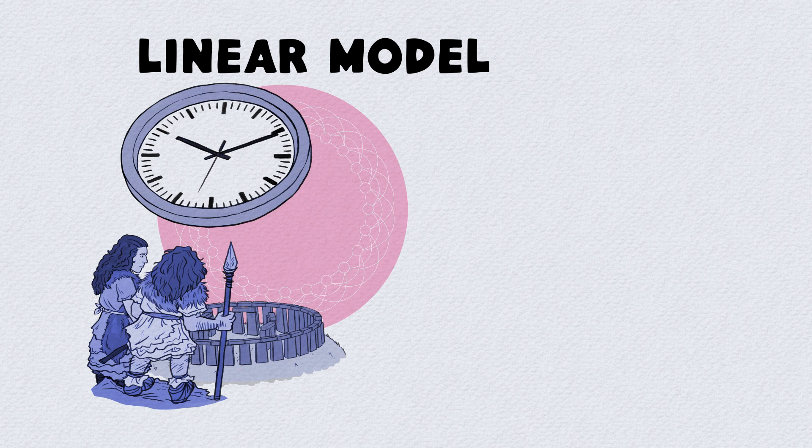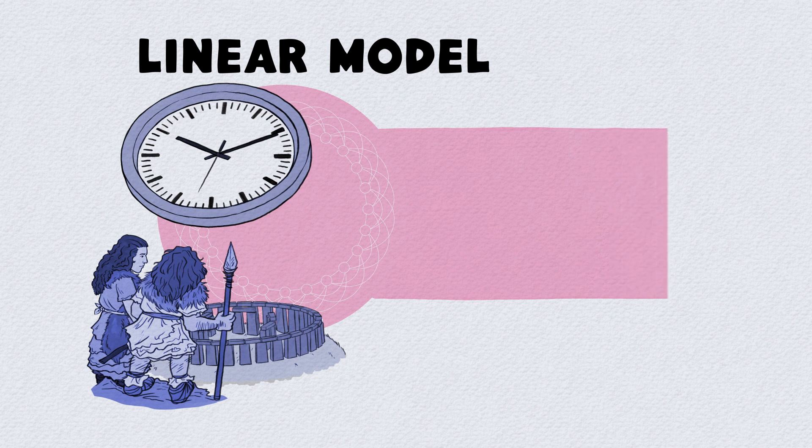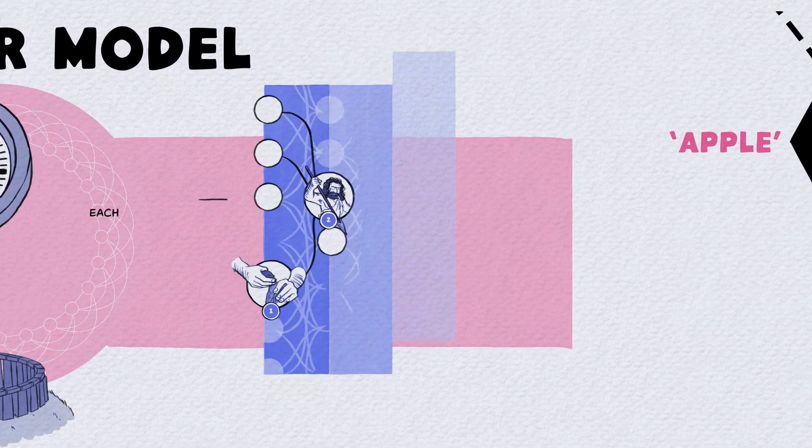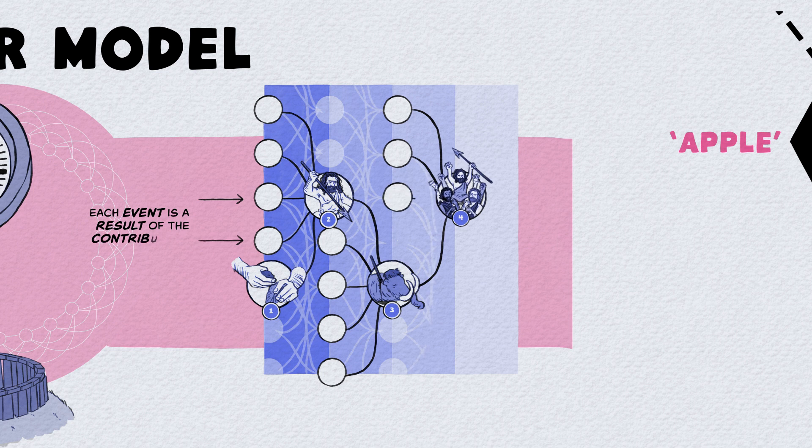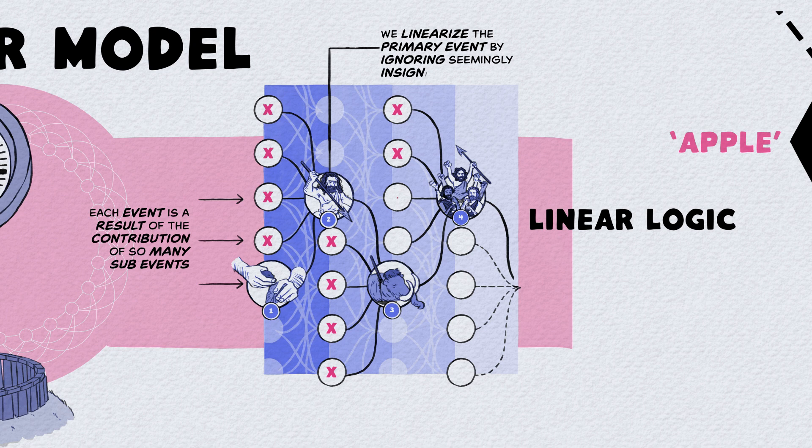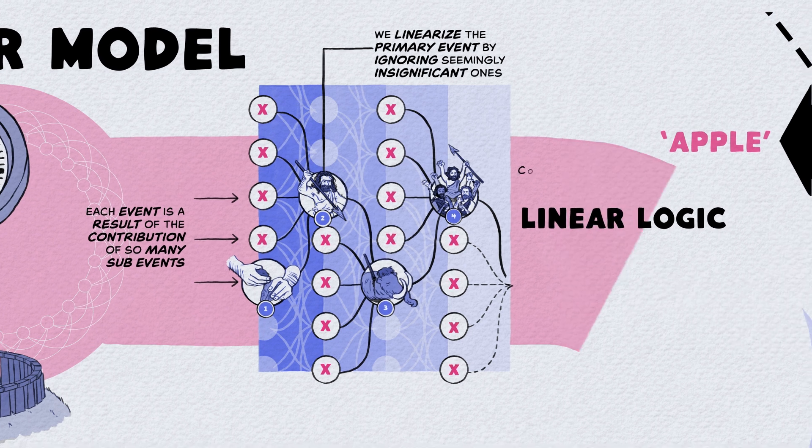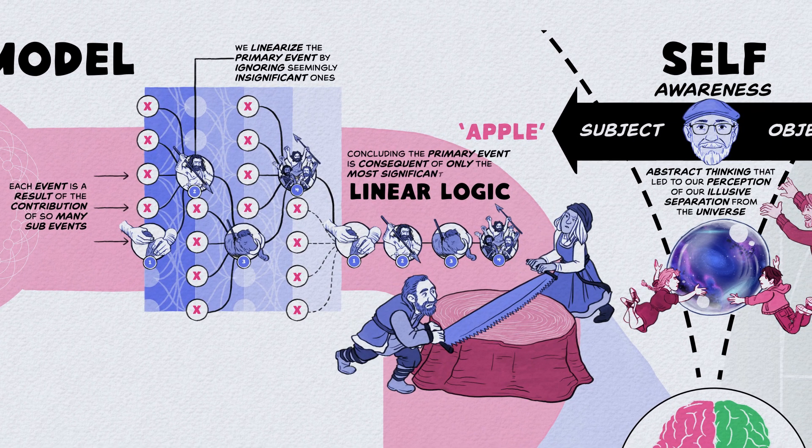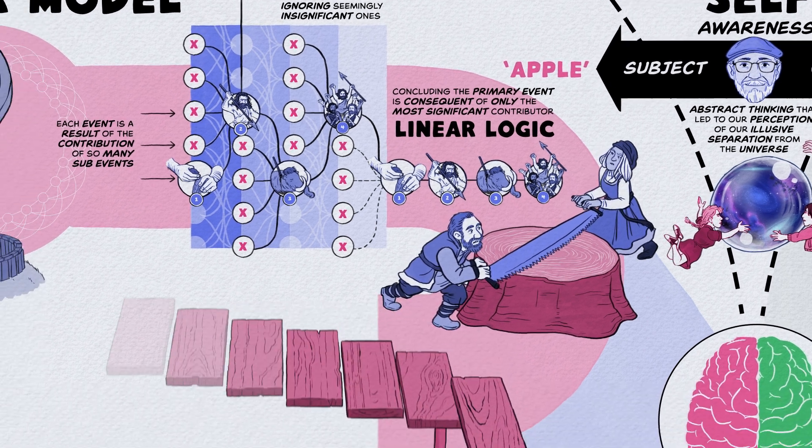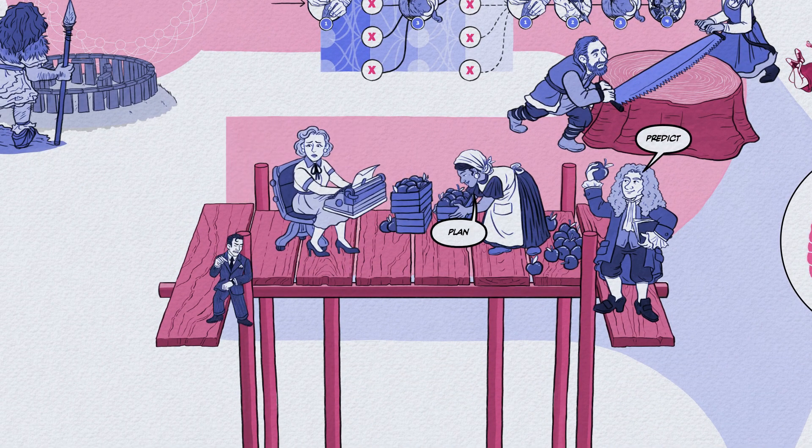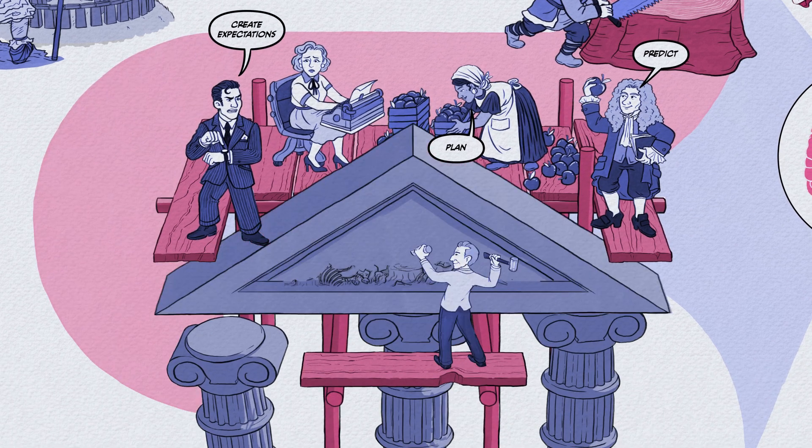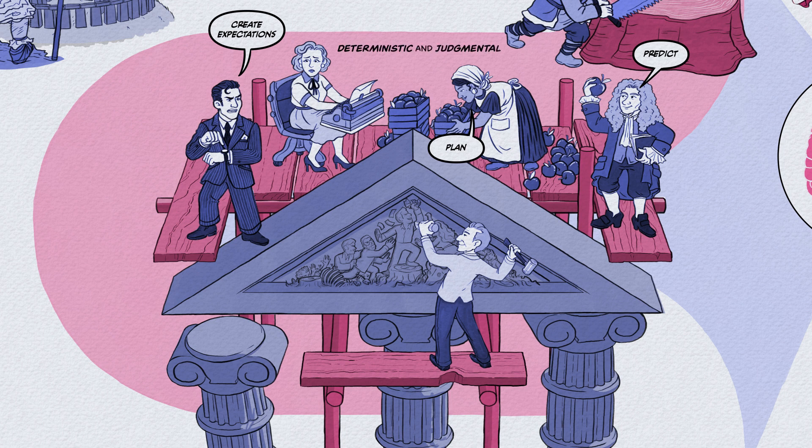But in the chaotic zone, the natural self-organizing process manifests as an absence of any proportionality of cause and effect, generally perceived as randomness. While each event is a result of the contribution of so many sub-events, we linearize the primary event by ignoring seemingly insignificant contributors, concluding the primary event is consequent of only the most significant contributor. It allowed us to predict, plan, and create expectations. This provided the pleasure of certainty for a linear logic that eventually created a deterministic and judgmental belief system.